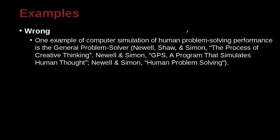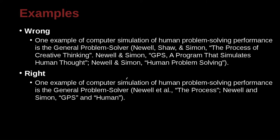One example of computer simulation of human problem-solving performance is the General Problem Solver — Newell, Shaw, and Simon, 'The Process of Creative Thinking.' That's looking strange. The correct approach is to use 'et al.' since there are three or more authors. Newell and Simon — that is two authors, so we don't use 'et al.' because it's not three or more. And then we have chapters called GPS and Human — two works by the same authors, cited with open and close parentheses, much more straightforward.